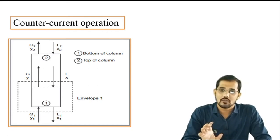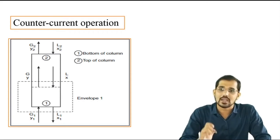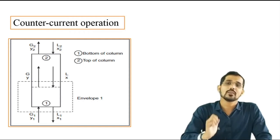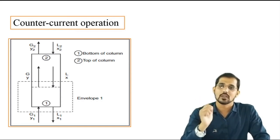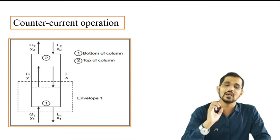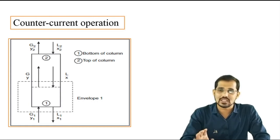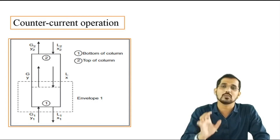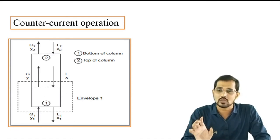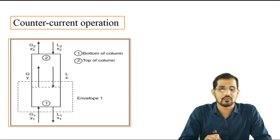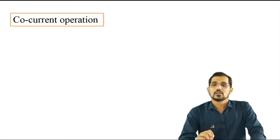For the outlet streams: G2 is the flow rate of the gas outlet stream and L2 is the flow rate of the liquid stream. Y2 is the mole fraction of component A in the gas outlet stream, and X2 is the mole fraction of component A in the liquid stream. At any point in the absorber, G and L are the flow rates of gaseous and liquid streams respectively, while small y and small x are the mole fractions of solute in the gaseous and liquid streams. The bottom of the column is represented by subscript 1 and the top by subscript 2.